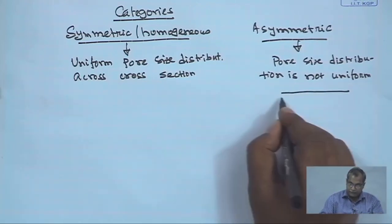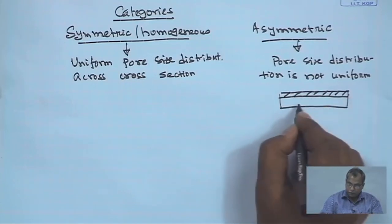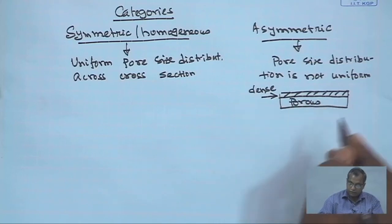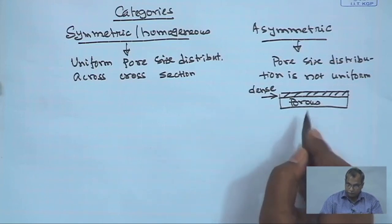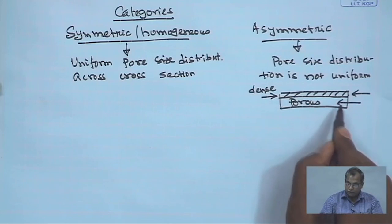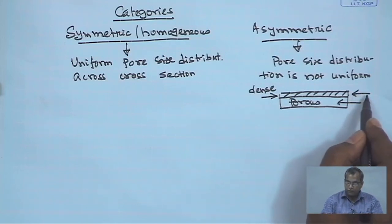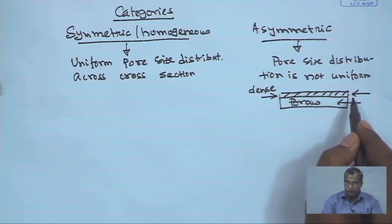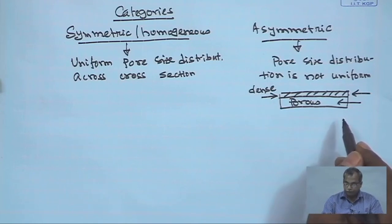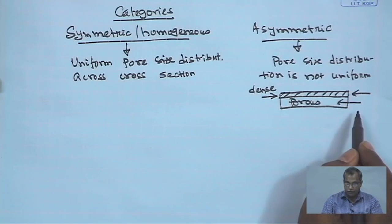In the case of asymmetric membranes, there is a thin dense skin followed by a porous substructure. The selectivity of the membrane comes from this thin dense skin. The objective of the porous substructure is to give mechanical support to the thin skin. Typically this skin will have a thickness of around 50 microns, and the porous substructure makes up the rest of the total thickness of around 150 to 200 microns.